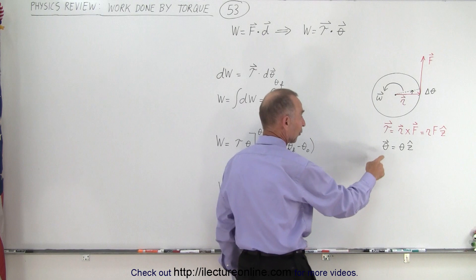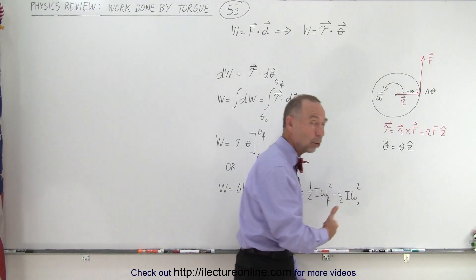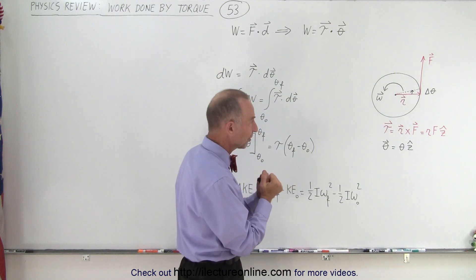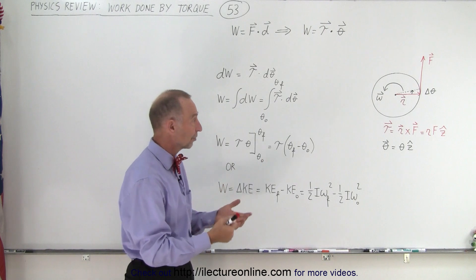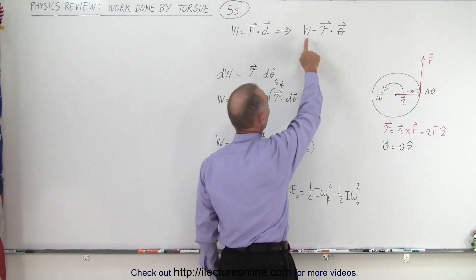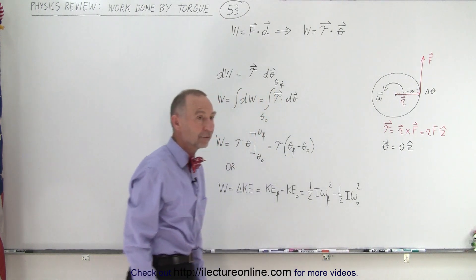In the same direction as the torque. Therefore, we can take the displacement in terms of angle as a vector quantity also pointing outside the board. You can see that the angle between the torque and the angular displacement is zero, which means the magnitude of the work equals the magnitude of the torque times the magnitude of the angular displacement.